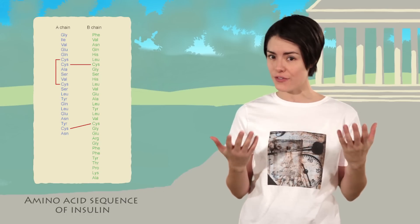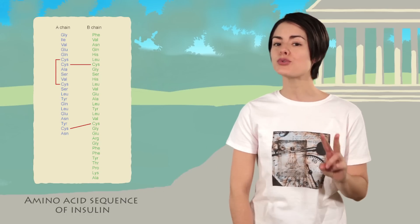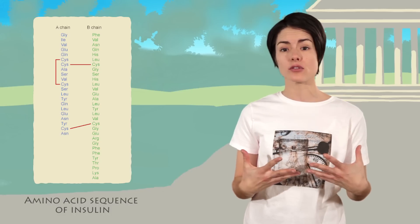Sanger used a combination of multiple laboratory techniques, including chemical digestion, electrophoresis, and chromatography, to determine the amino acid sequence of insulin. He also established that insulin was composed of two chains joined together by disulfide bonds.